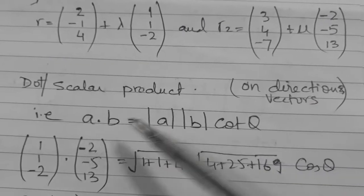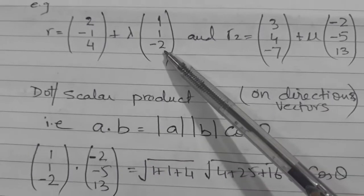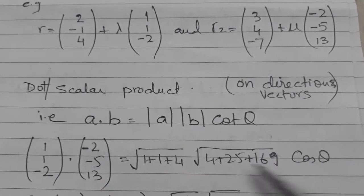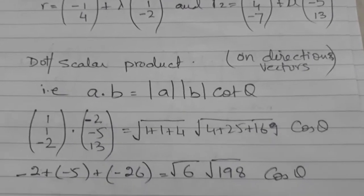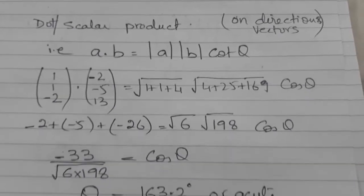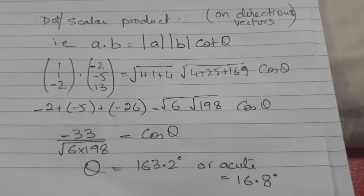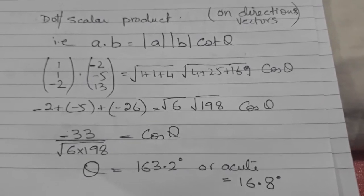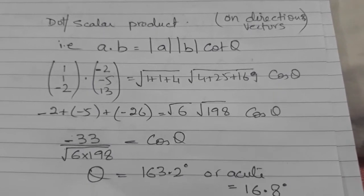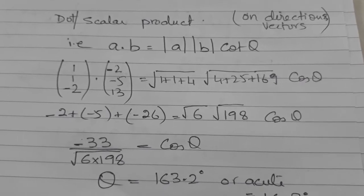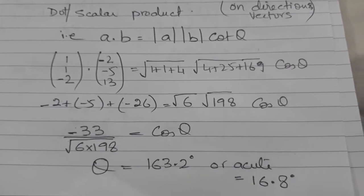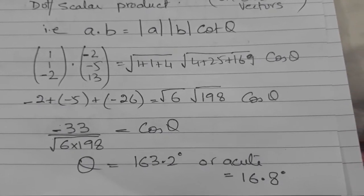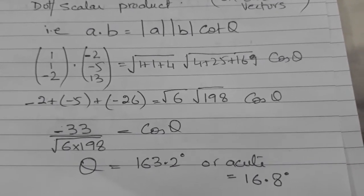Taking the direction vectors A and B and applying them in the formula, we find the angle. The angle comes out to 16.8 degrees (acute) and 163.2 degrees (obtuse). At times in the exam it is asked to mention the angle in acute form, but for safety, mention both the acute and obtuse forms.